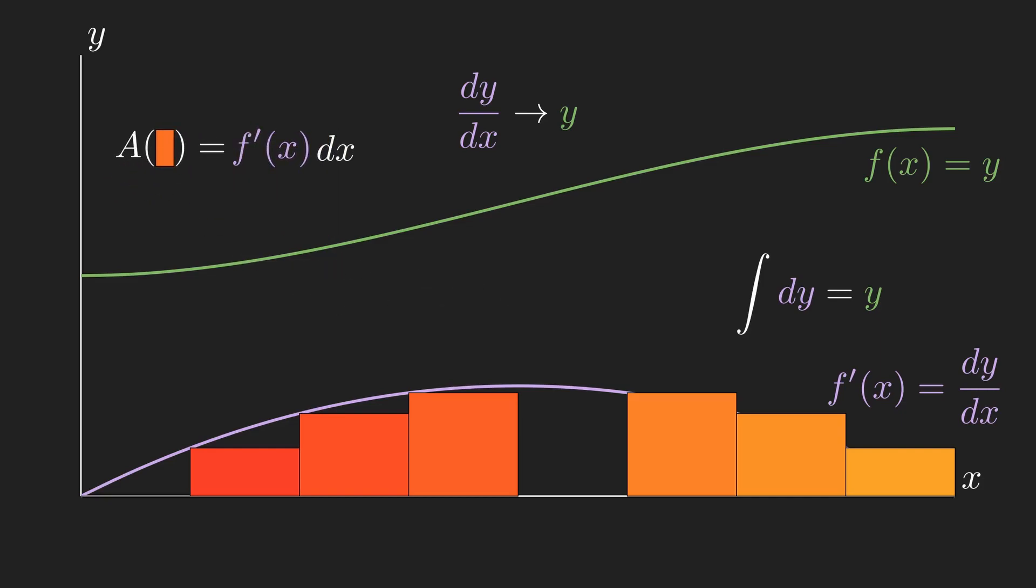So the area is f dash of x times dx. We can substitute dy by dx for f dash of x and cancel out dx. So our rectangles are equal to the dy value we needed. Hence, getting the area under our curve is equivalent to reversing the process of differentiation.